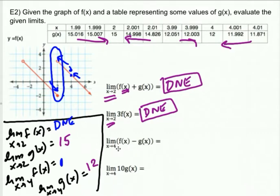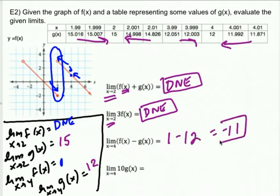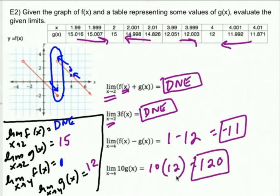For the other two: the limit as X approaches four of F minus G is just one minus 12, which is negative 11. And the limit as X approaches four of 10 times G is 10 times 12, which is 120. If you do all the legwork to find the limits ahead of time, it's a lot easier to answer the questions.